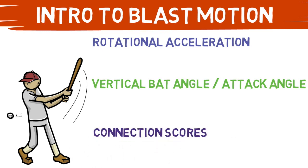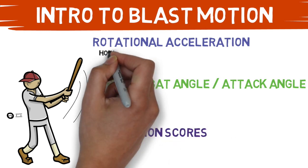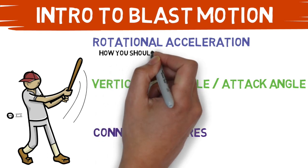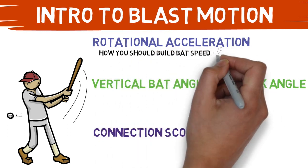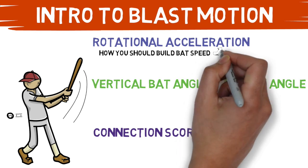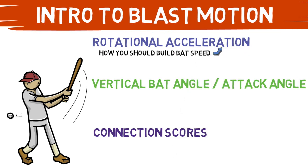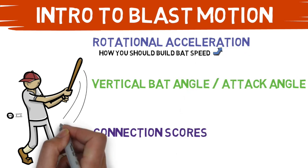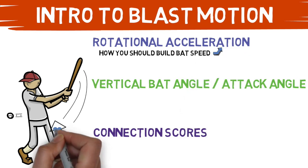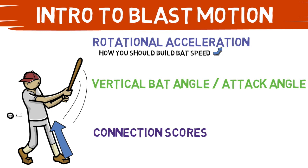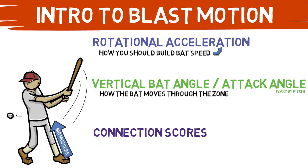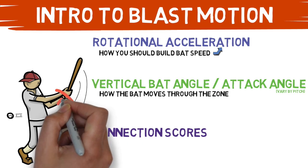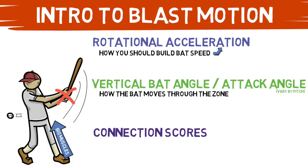Let's start with rotational acceleration. This number is a measure of how quickly your barrel accelerates into the swing plane. This is the correct way you should work to increase bat speed. If this number is high, that means the athlete is utilizing their big muscles from the ground up to create more bat speed, and not just pulling the bat across the zone with their hands during their swing.